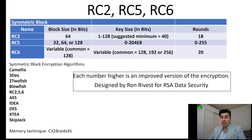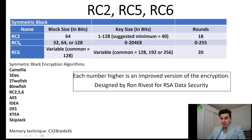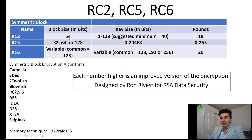There's RC2, RC5, and RC6. Each number is an improved version of the encryption — RC5 is a lot stronger than RC2, and RC6 was an improvement over RC5. RC2 has a 64-bit block size, a suggested minimum key of 40 bits, and 18 rounds.